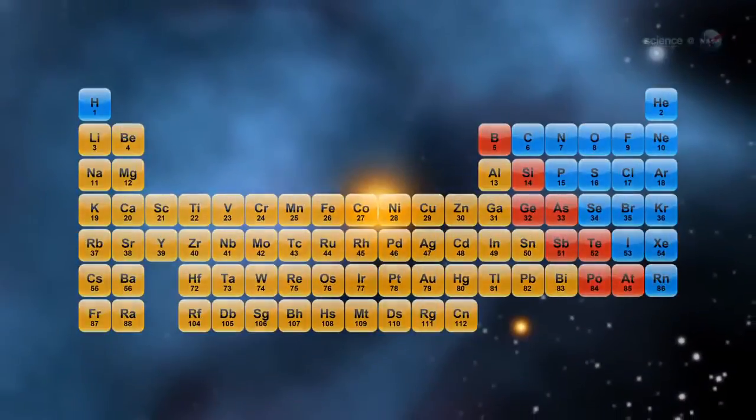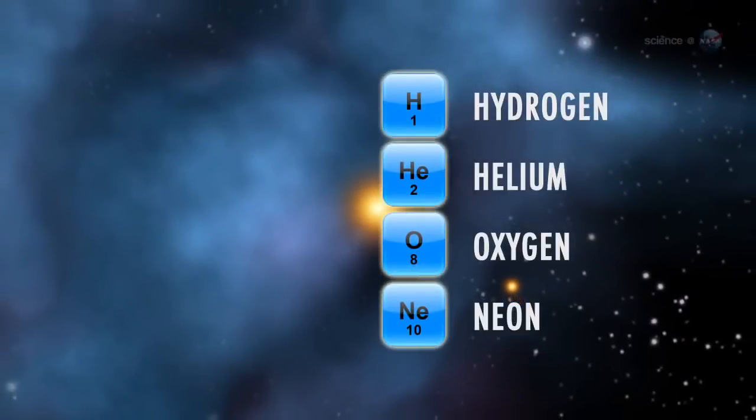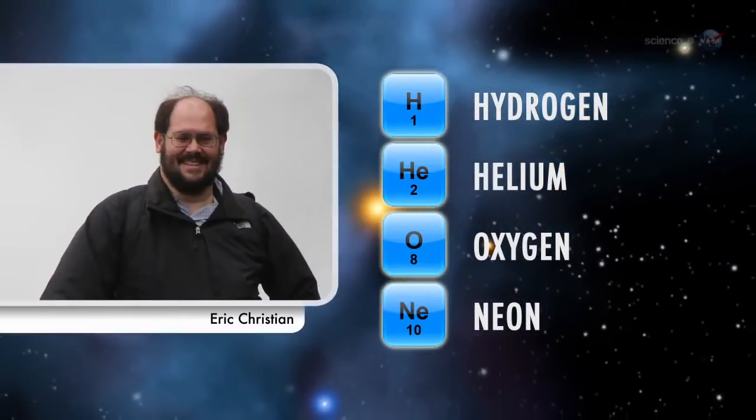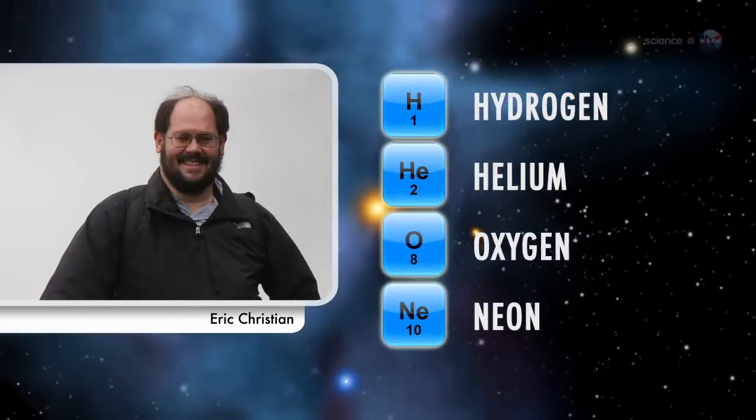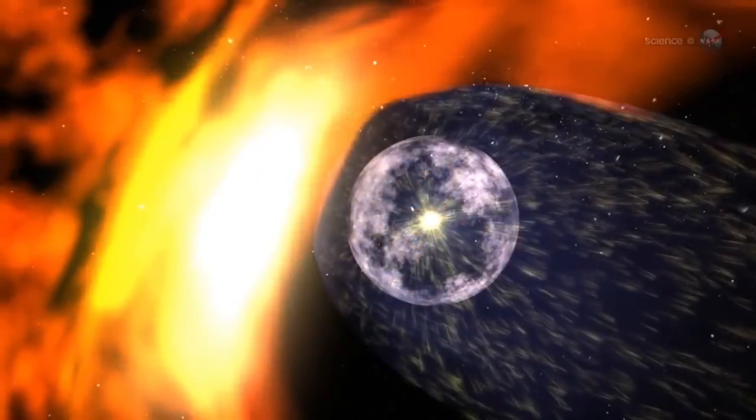We've directly measured four separate types of atoms from interstellar space, and the composition just doesn't match up with what we see in the solar system, says Eric Christian, mission scientist for IBEX at NASA's Goddard Space Flight Center in Greenbelt, Maryland. In a series of six science papers appearing in the Astrophysical Journal,